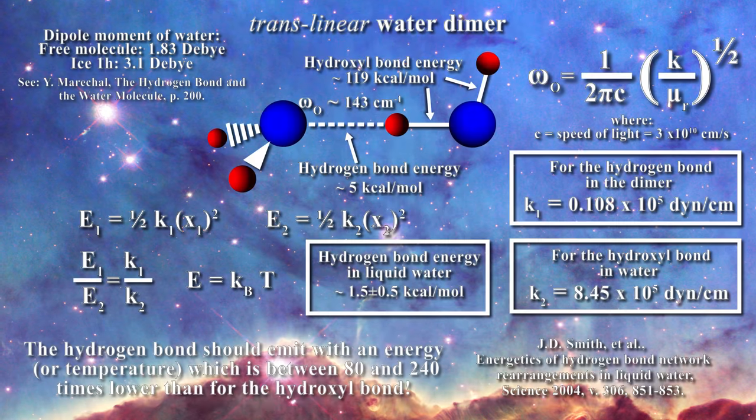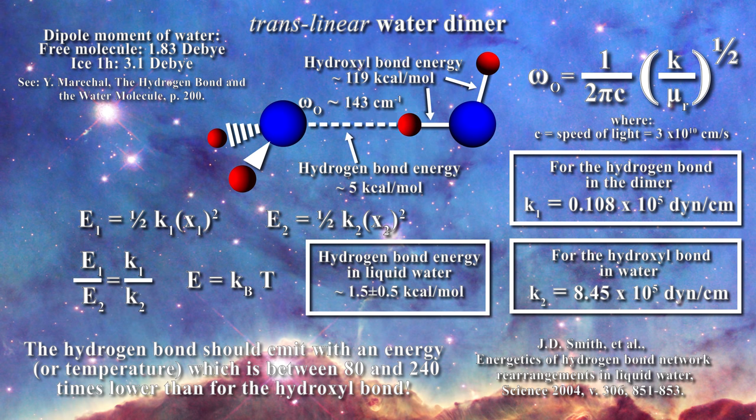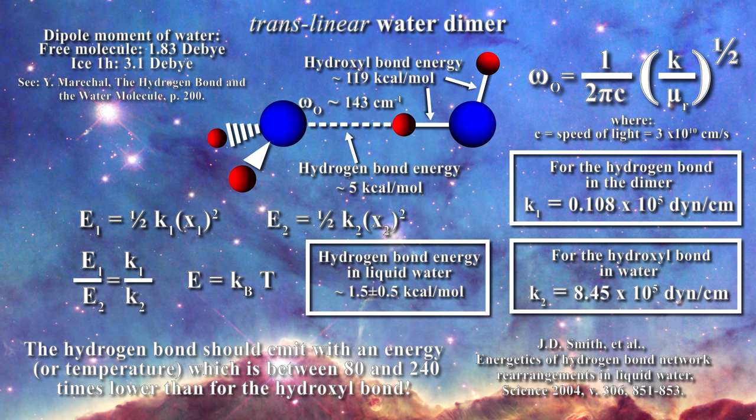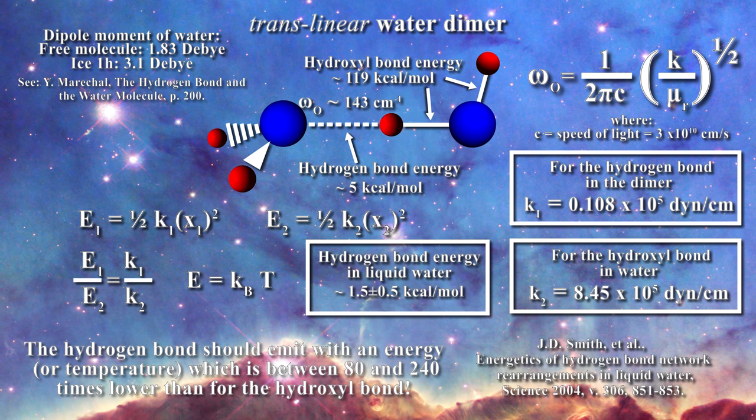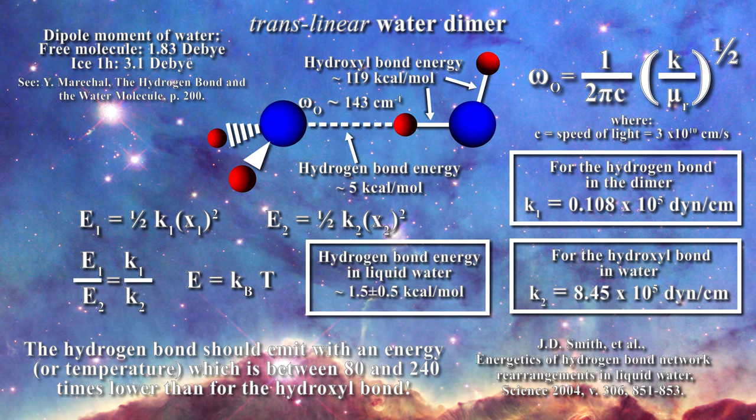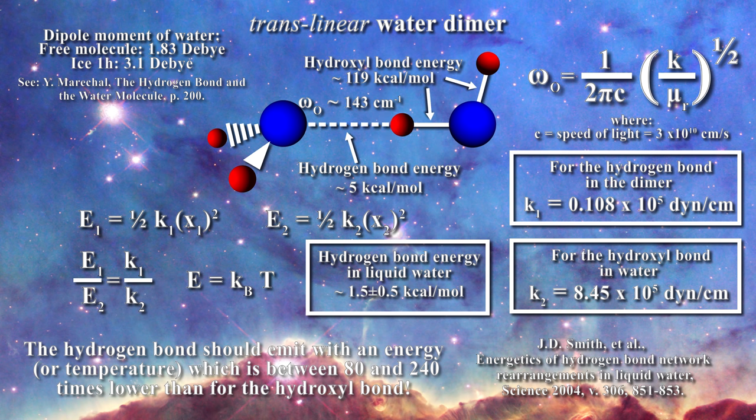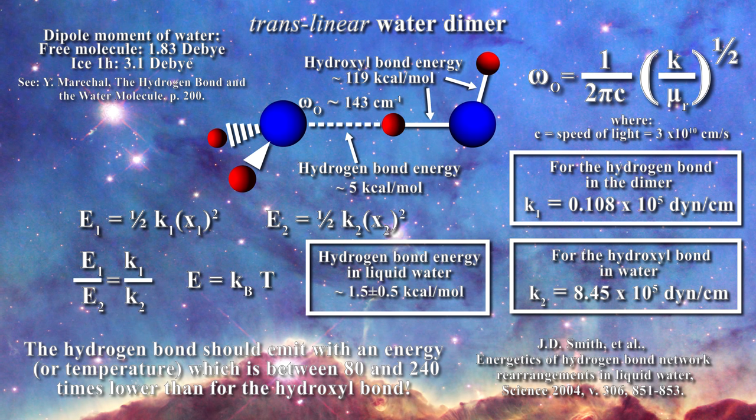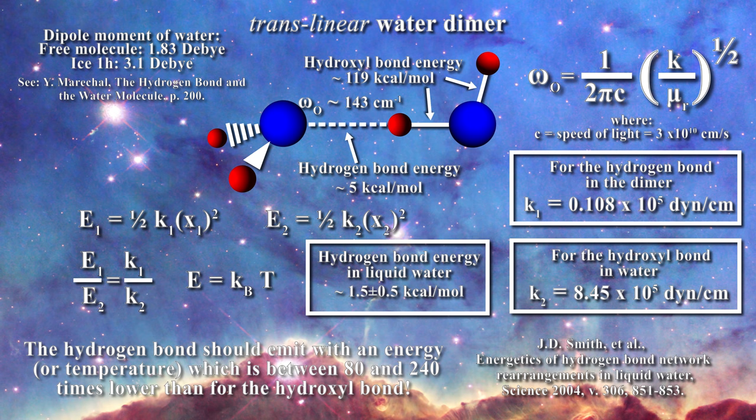But when one considers water, the bond strength between the hydroxyl bond and the hydrogen bond are vastly different. As a result, when one thinks of water, one should actually be thinking about two separate systems, not just one. One needs to consider the hydroxyl bond first and then consider how the hydrogen bond is behaving. Energetically we are dealing with two separate systems and that is why cosmologists simply fail to properly consider the impact of water in their experiments.